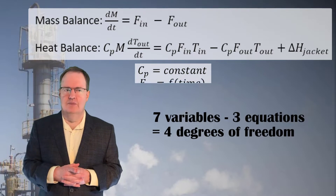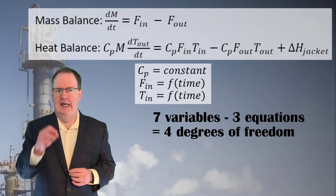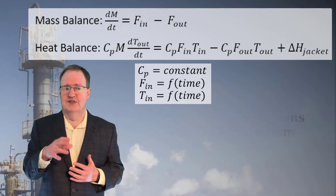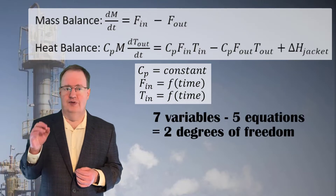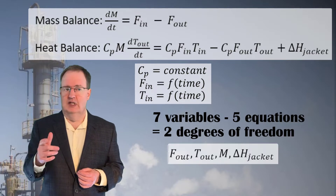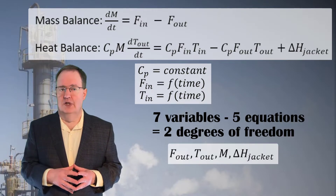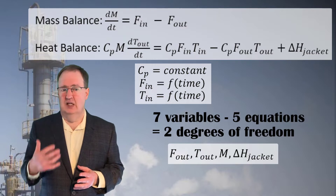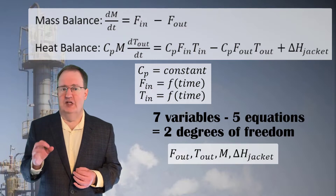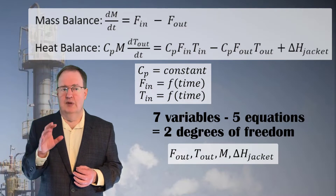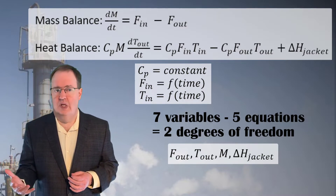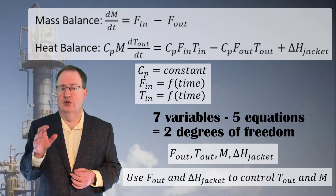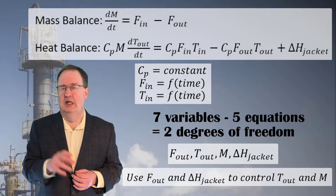But hold on — the problem statement makes it clear that the inlet flow and its temperature can't be controlled; we have to react to changes in them. That leaves us with only two degrees of freedom and four variables that aren't spoken for: the outlet flow and temperature, the mass in T100, and the heat flow to the jacket. Our objectives were to maintain a 50% level and to control T-out at 50 degrees C — clearly represented by M and T-out. We must use F-out and delta-H-jacket as our only remaining variables to control M and T-out.